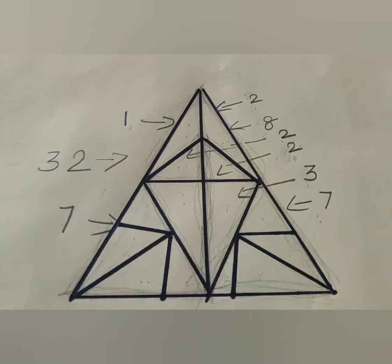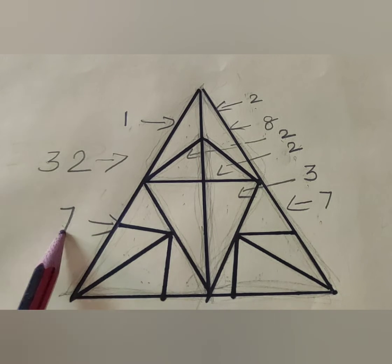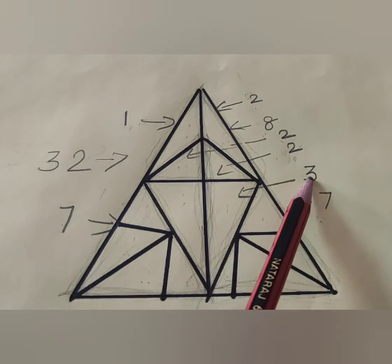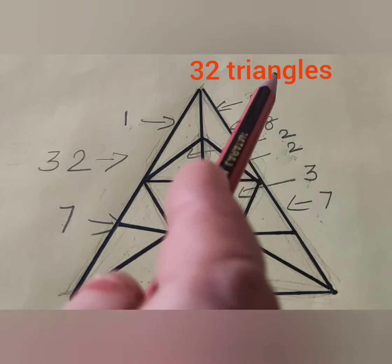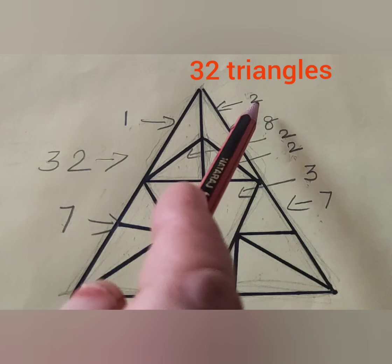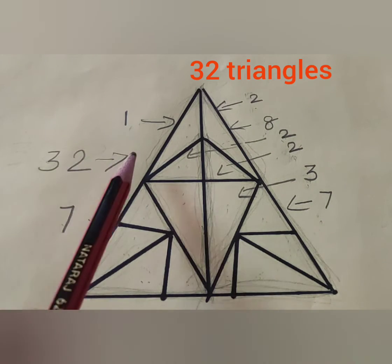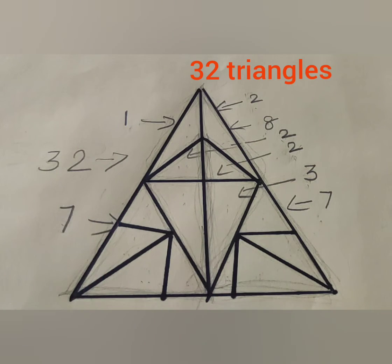Shall we count total how many triangles are there? 7 plus 7, 14 plus 3, 17 plus 2, 19 plus 2, 21 plus 8, 29 plus 2, 31 plus 1, 32. Total, 32 triangles are there.